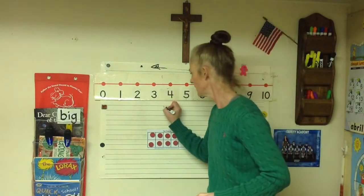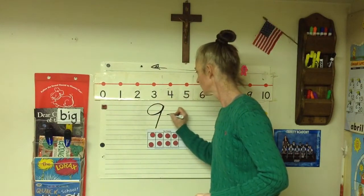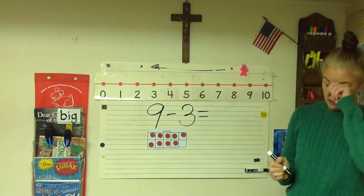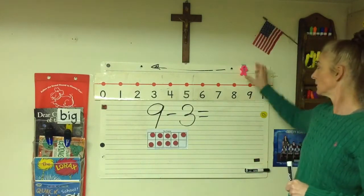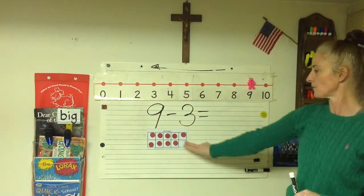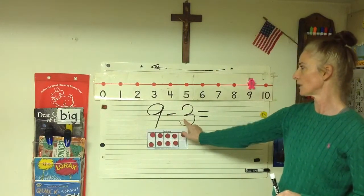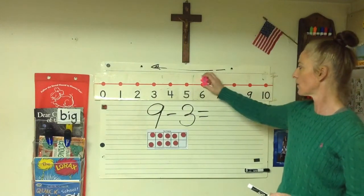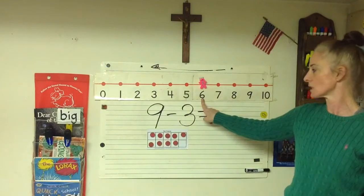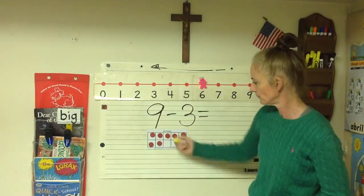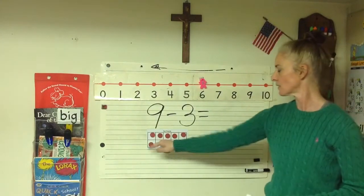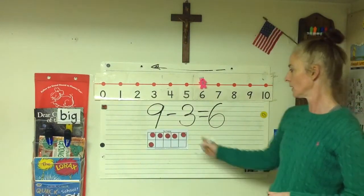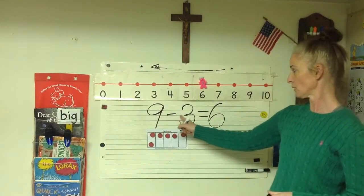I'm going to do nine minus three equals. We're going to put our figure on nine on the number line. We have nine in our ten frame. Nine minus three — subtract, go back three steps: one, two, three. We landed on the six. Let's see if our difference is six when I take three out of the ten frame. Do we have six? Five, six — yes. Nine minus three equals six.